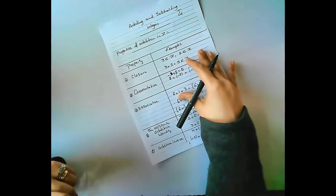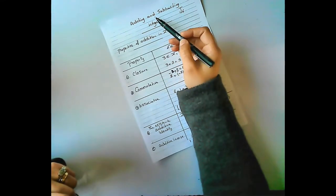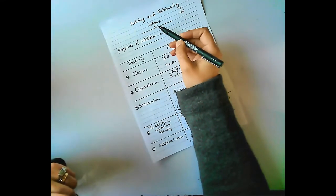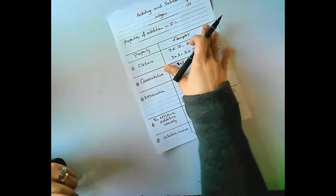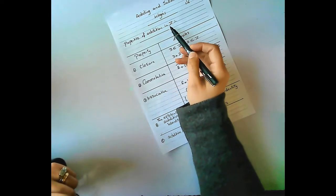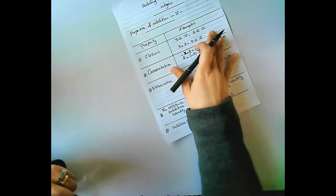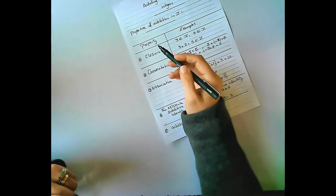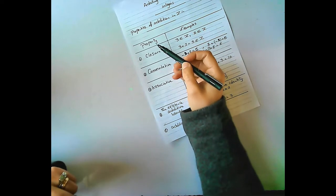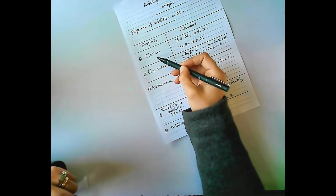Hi everybody. Adding and subtracting integers — properties of addition in Z. Property 1: Closure.